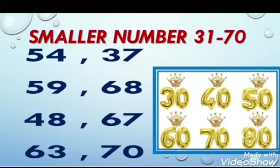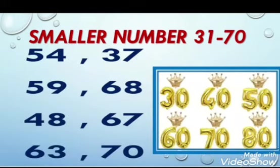We will read the tens: 30 — no; 40 — no; 50 — yes! 50 is in this example. So my dear students, 59 is the smaller number than 68, because 59 comes first in counting, then 68. So 59 is the smaller number.